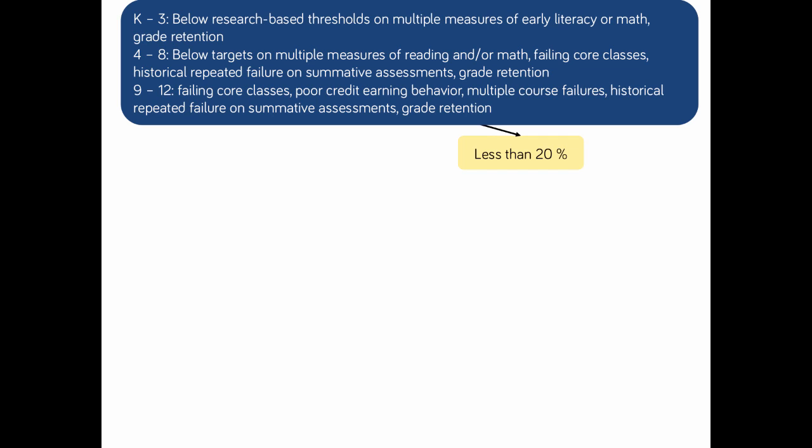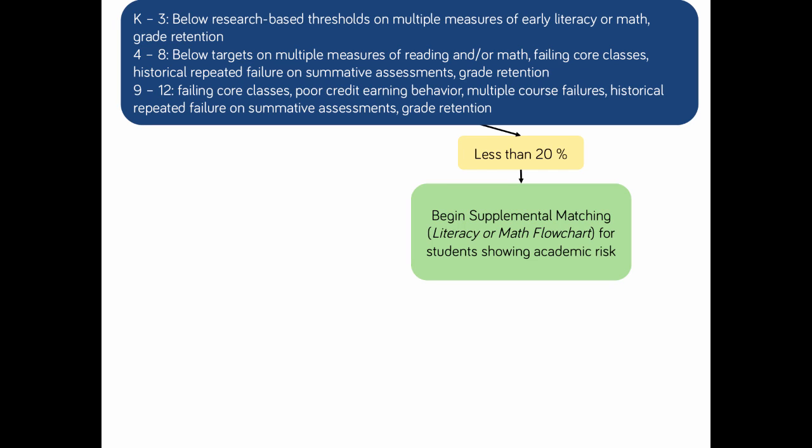If the percentage of students demonstrating academic risk is less than 20% of the grade or school, then we can begin matching those students to supplemental interventions. The remainder of Module 2.2 will focus on specific literacy supplemental interventions appropriate in early literacy, later elementary literacy, and secondary literacy.